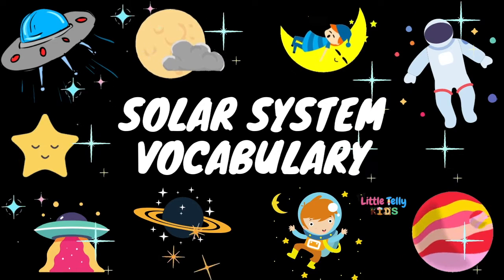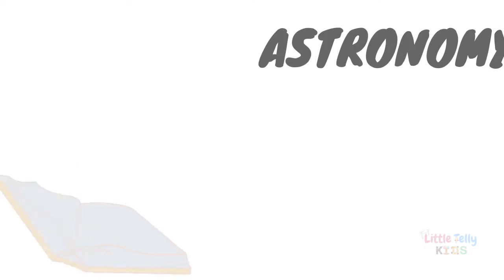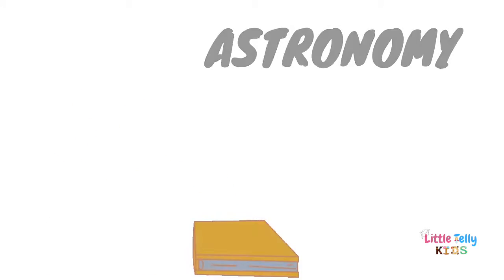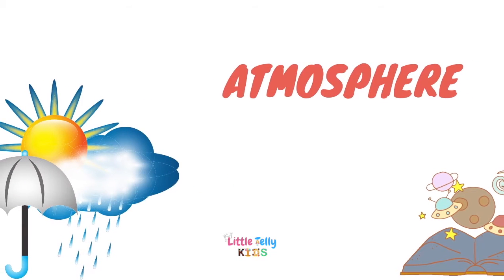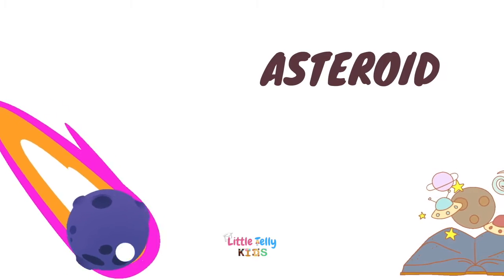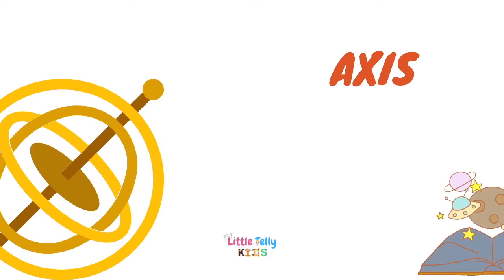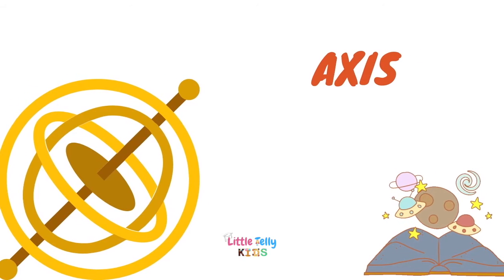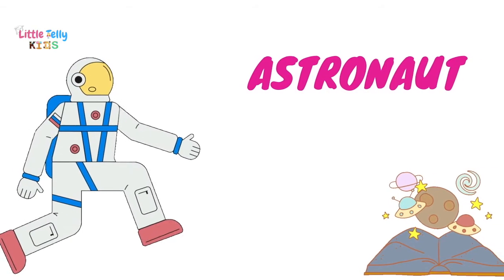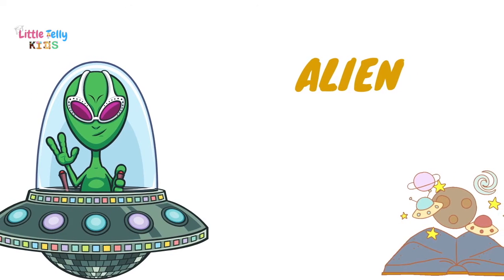Hi kids, today we will have a look at solar system vocabulary. Astronomy. Atmosphere. Asteroid. Axis. Astronaut. Alien.